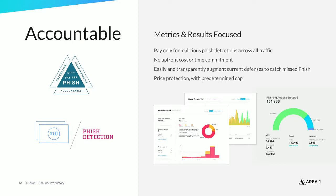At Area 1 Security, we believe in delivering cybersecurity that works — and if it doesn't work, you shouldn't have to pay for it. We offer a new model of cybersecurity: the first and only performance-based protection in the industry. With a 99.997% phishing catch rate and a 25-plus day average time advantage to detect phishing infrastructure compared to competing solutions, we're confident we can deliver the most effective protection you can buy — or you don't pay anything. With our pay-for-phish program, you pay only if phish is detected, with no upfront cost or time commitment. We also offer annual subscriptions, with the option to choose the pay-for-phish model and then convert to an annual subscription at any time.